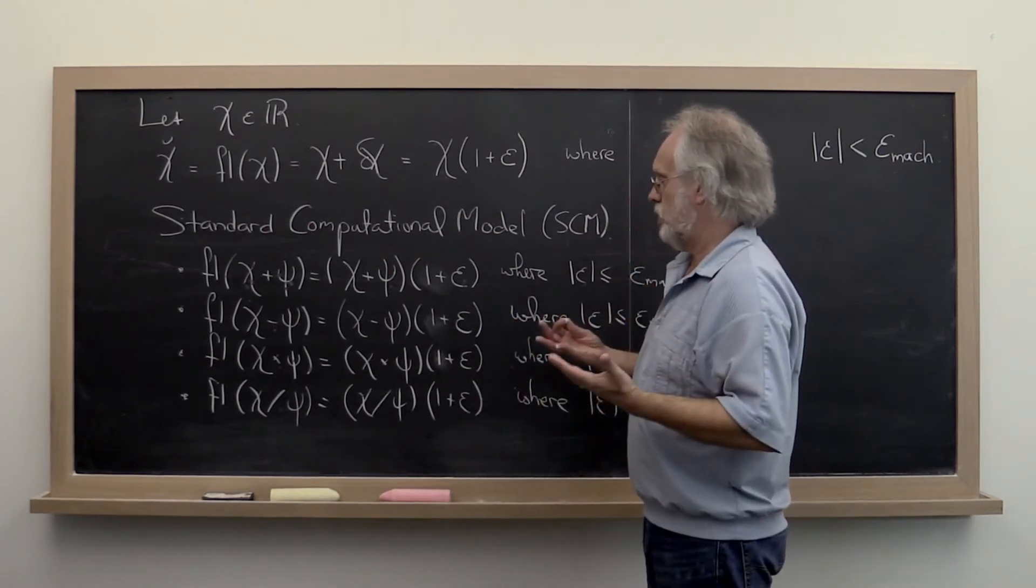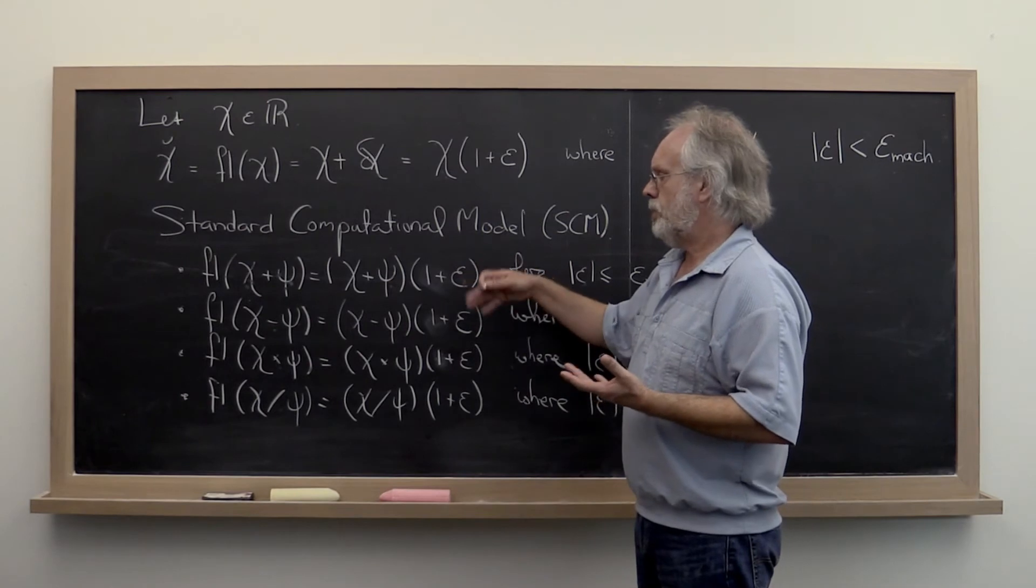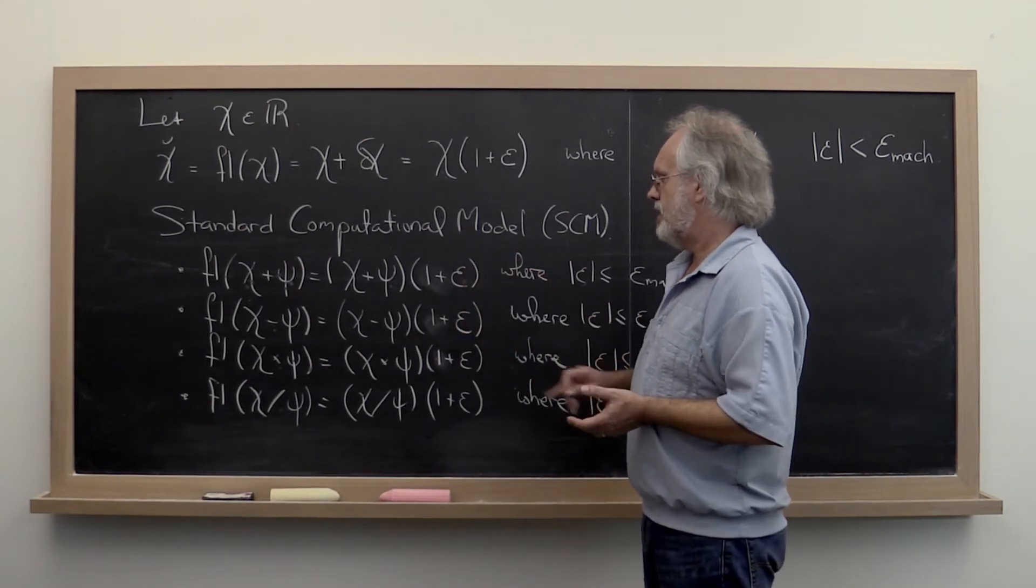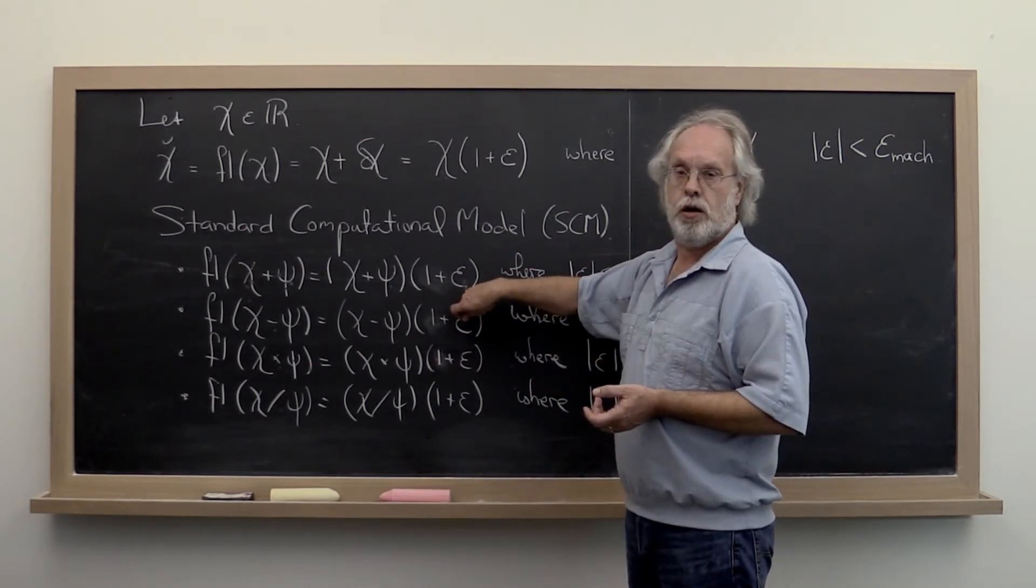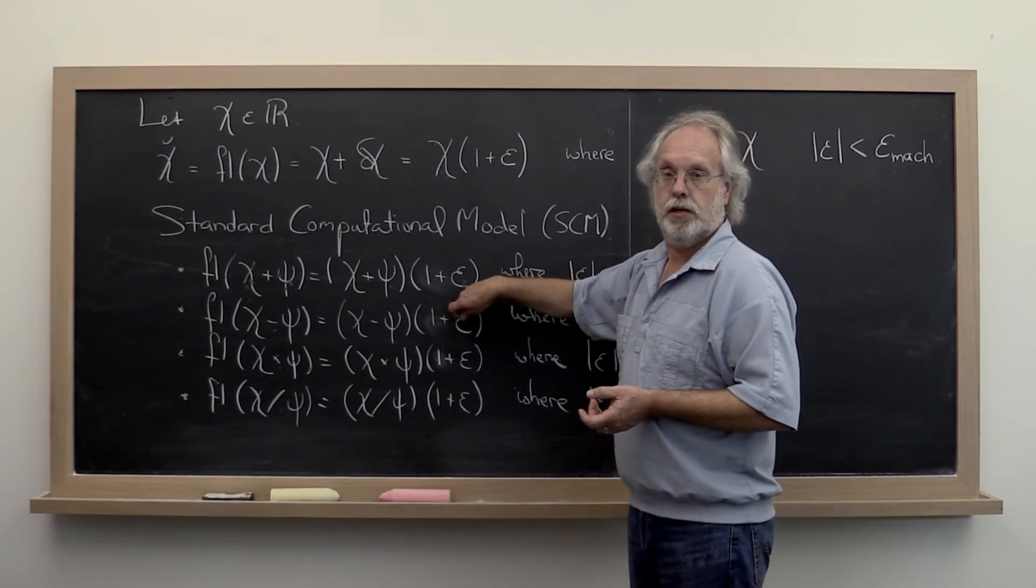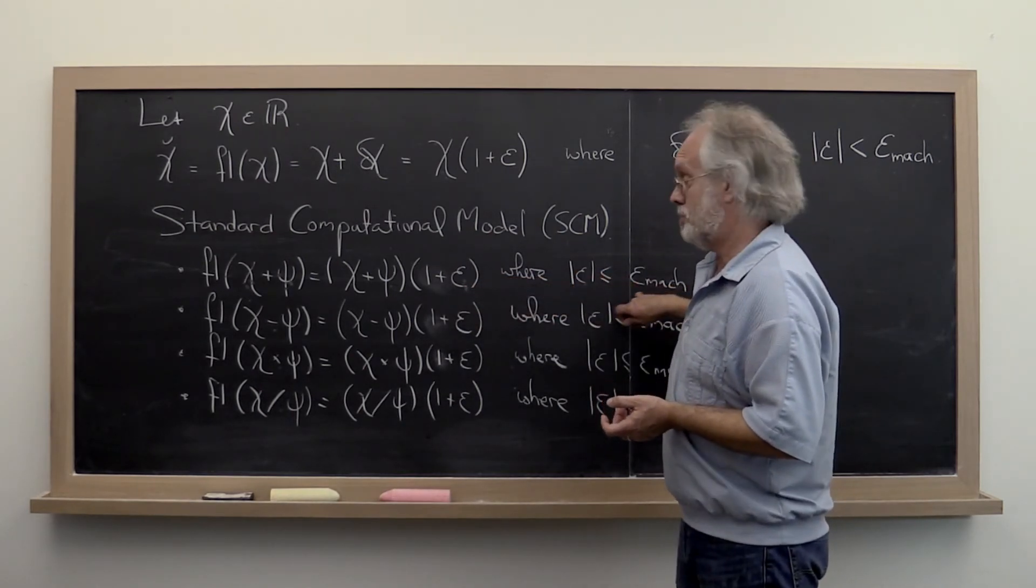Now what's important to realize is that every time you do an addition, subtraction, etc., the epsilon that you incur may be slightly different. Its value is bounded by the same machine epsilon, but the value you actually incur may be slightly different.